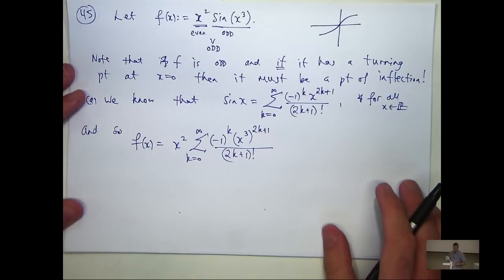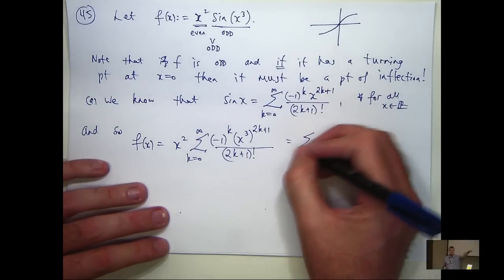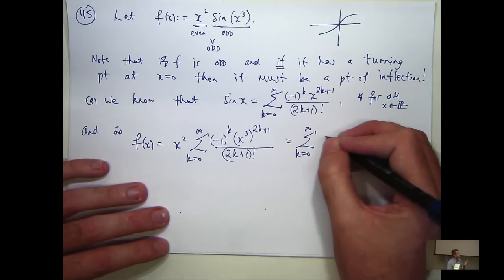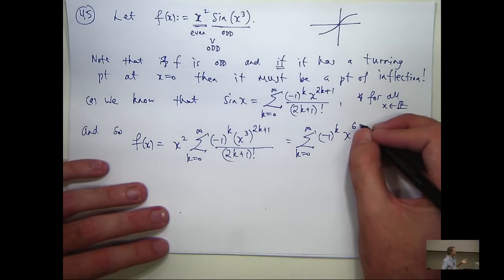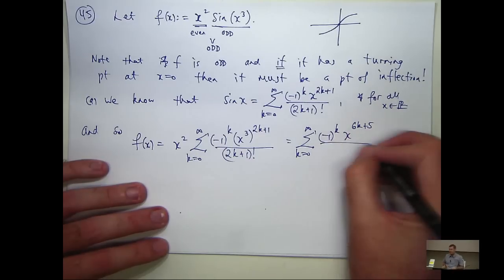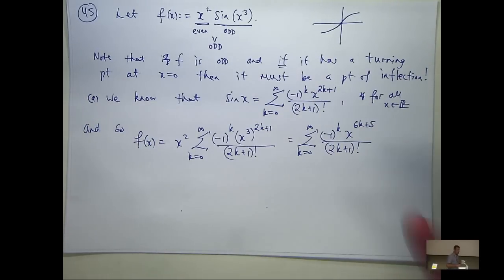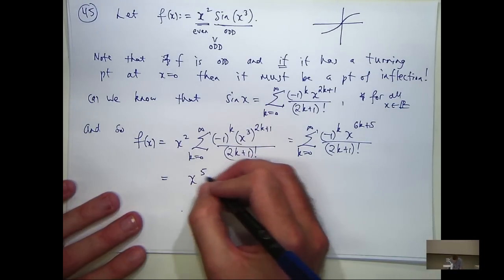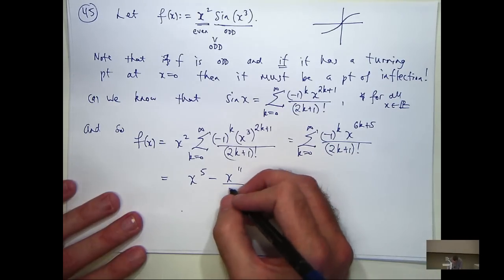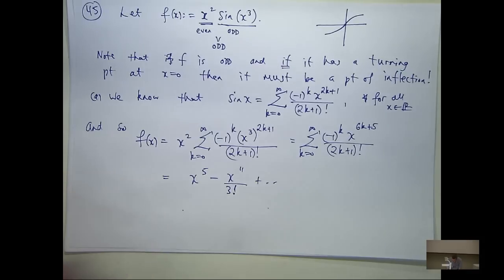So let's just fix that up — bring the x squared in there. So what are we going to get? We're going to get something like x to the power 6k plus 5. Let's just write out a couple of terms of the series to give us a slight feel for it. So that's our power series about x equals 0.